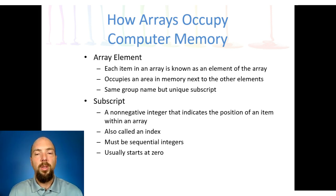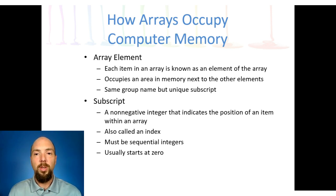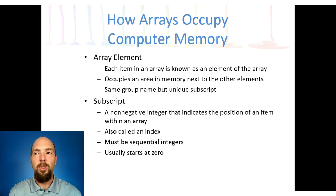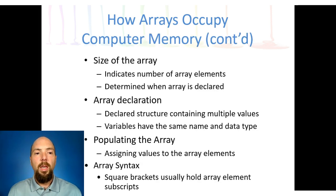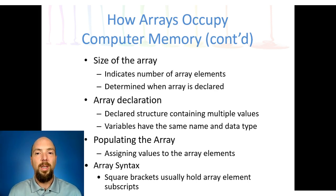Each array element is identified by a subscript, which is simply an integer — typically starting at zero and going up. In some languages such as Raptor, the array index actually starts at one. You have to be aware of what programming language you're using and its requirements. Each array has a size — simply how many values are inside it — and we determine that size when the array is declared.